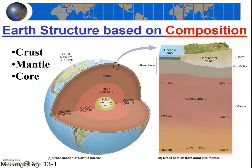In summary, if we're talking about the layers of the earth based on composition, we have three layers: the crust, the mantle, and the core. The crust is made out of basalt in the oceans and granitic rock on the continents, the mantle is made out of peridotite, and the core is made out of iron and nickel.